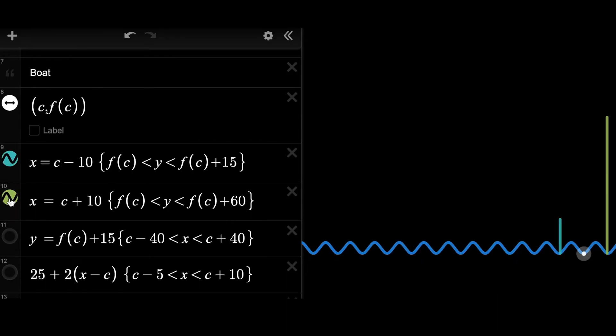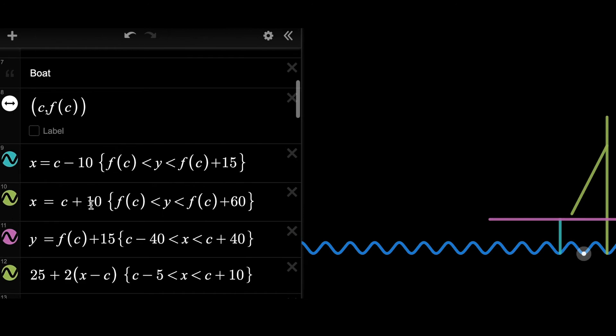Next, we can build the components of the boat. As you can see that we use two vertical lines, one horizontal line and a slope line to build this sailboat. And we want the boat to move along with the wave so all the functions here tie with the value of c.